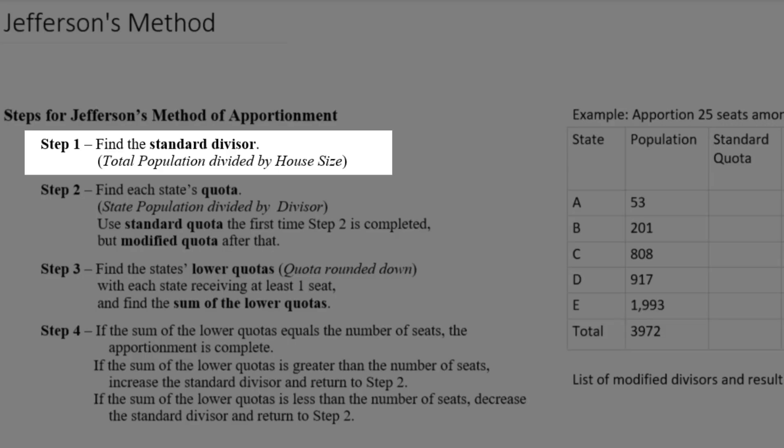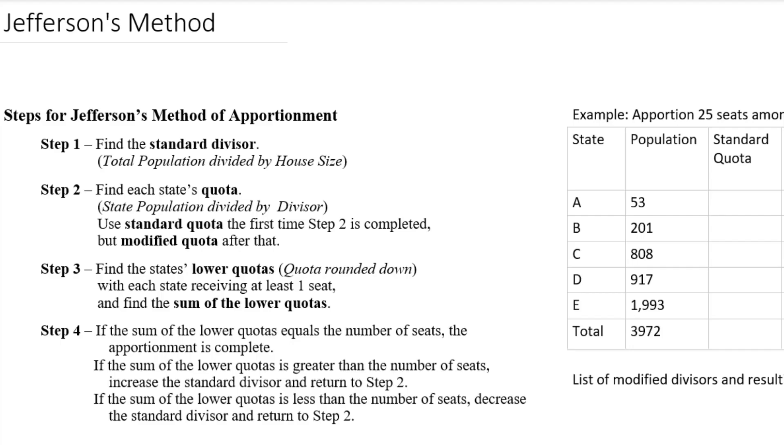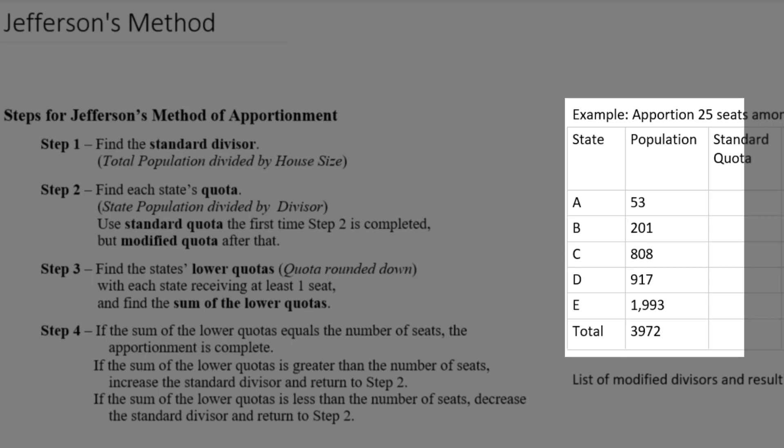So in every apportionment method, we're going to start out by finding the standard divisor. That's the total population divided by the house size. In this case, we're told to apportion 25 seats among these states.